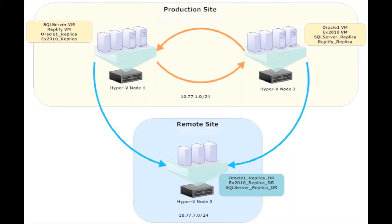With DoubleTake 5.3, we're able to take this one level further by replicating those Hyper-V virtual machines to a remote subnet with a different IP address range. When failover occurs, DoubleTake will automatically update the IP address inside the virtual machine.